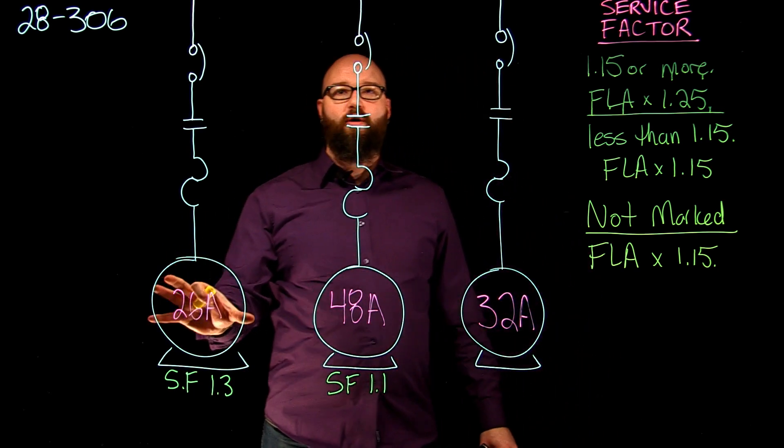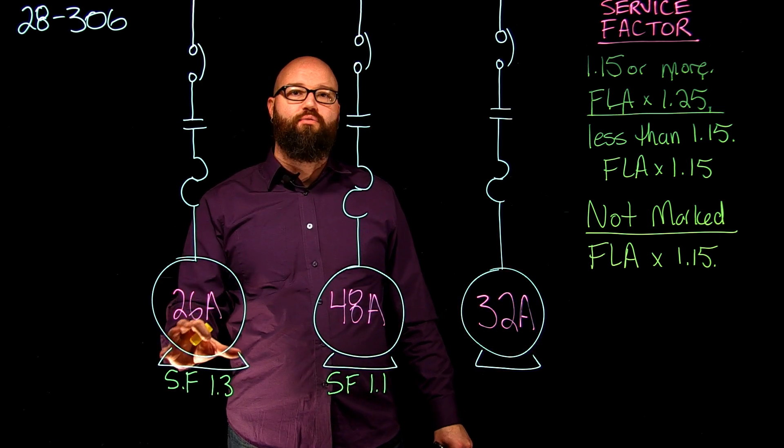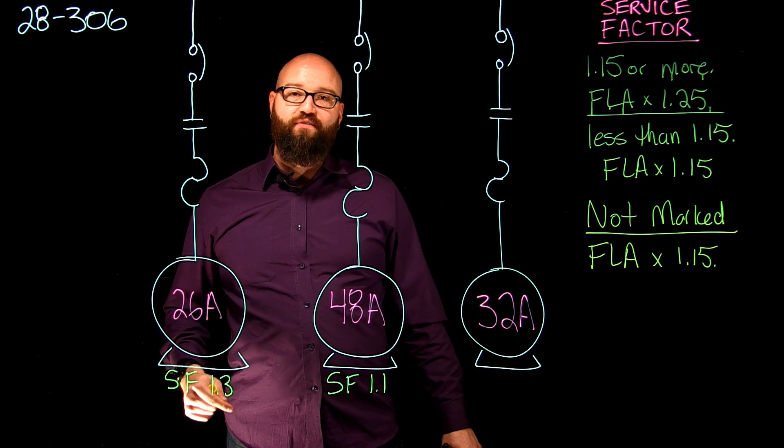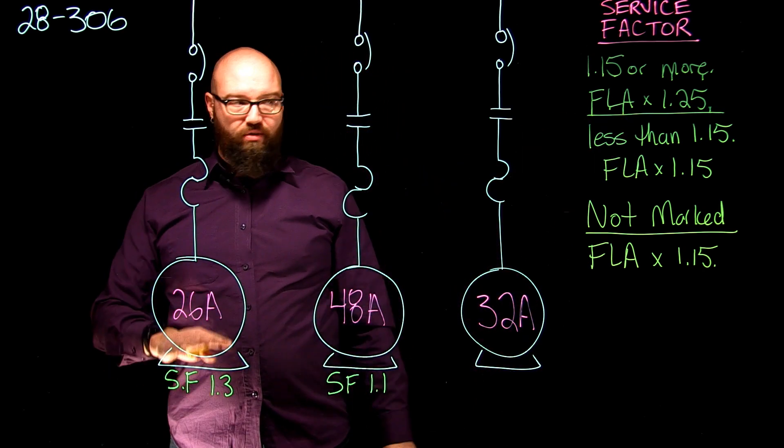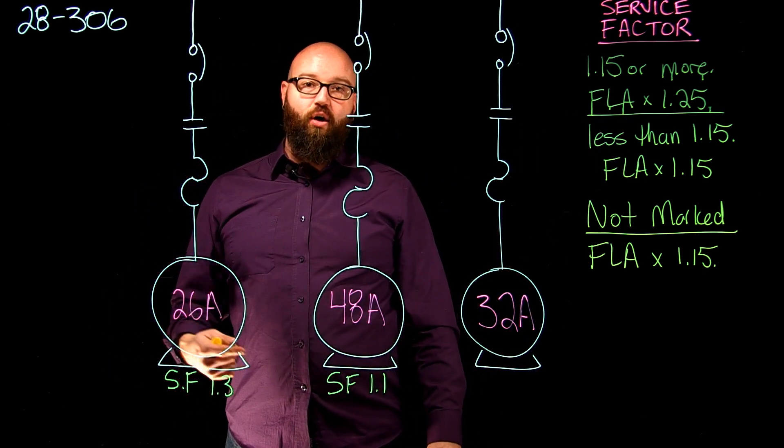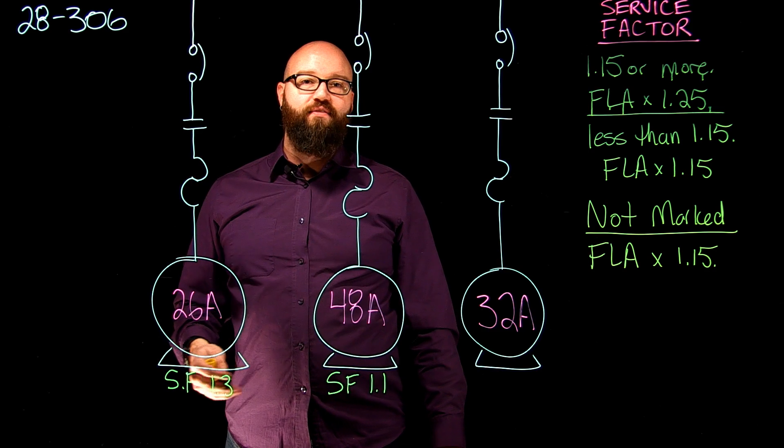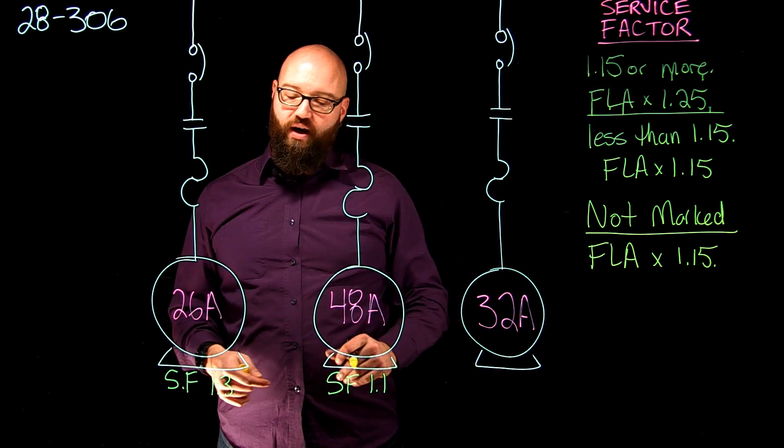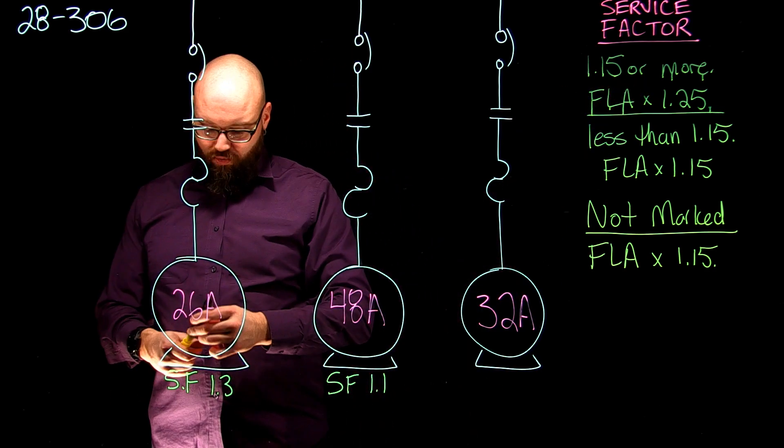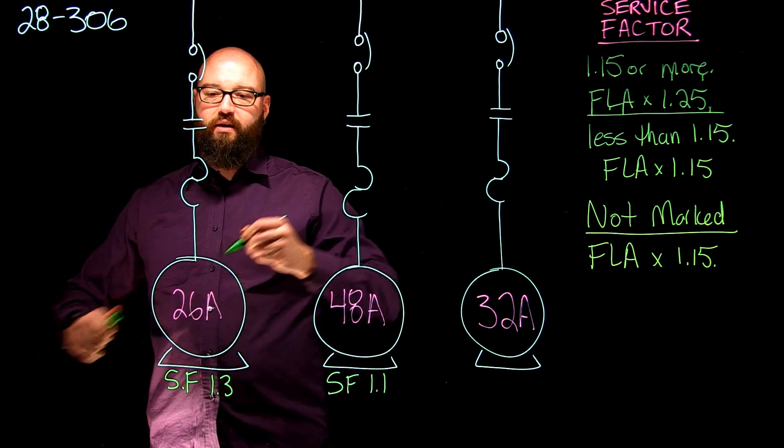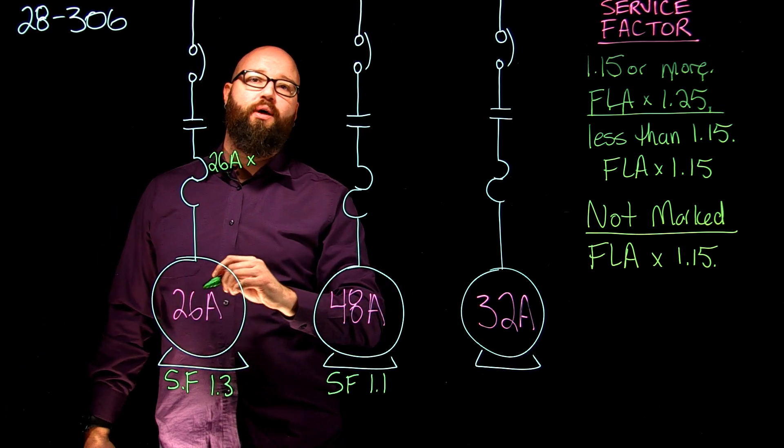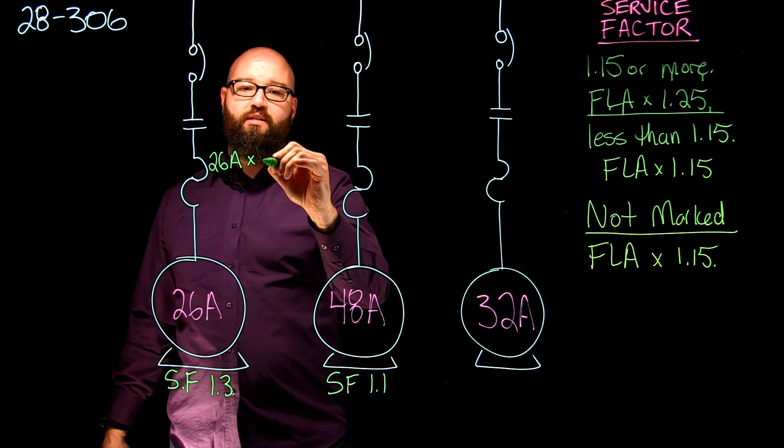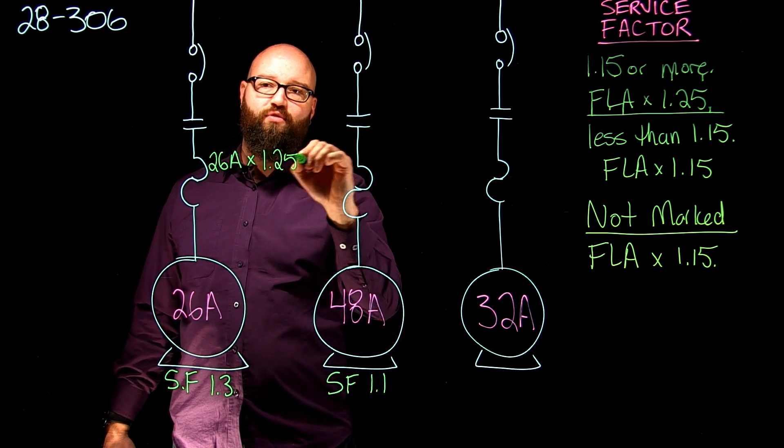The first one we have, we have a marked service factor of 1.3 and an FLA of 26 amps. According to what we just talked about, that FLA is larger than 1.15, inclusive of 1.15. So we're going to take that number, that 26 amps, and we're going to multiply it by 125%, so times 1.25.